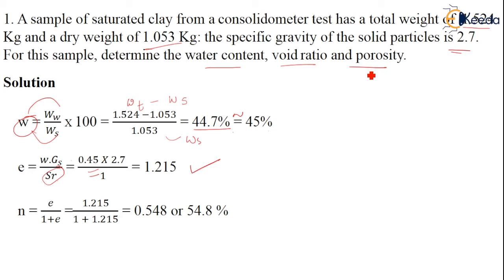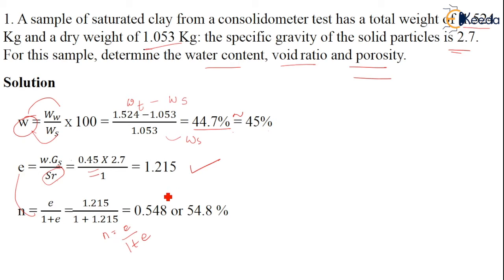The third quantity is porosity. We know the relationship between void ratio and porosity: porosity n equals E divided by (1 + E). Substituting the values, the calculated value is 0.548. Since it must be expressed as a percentage, it is 54.8%.